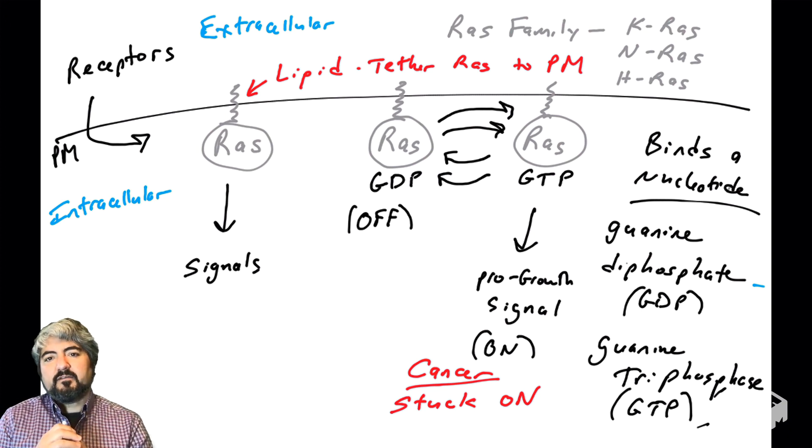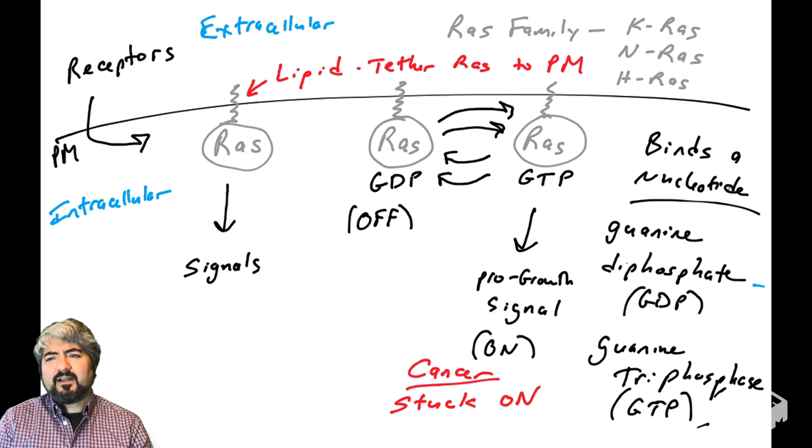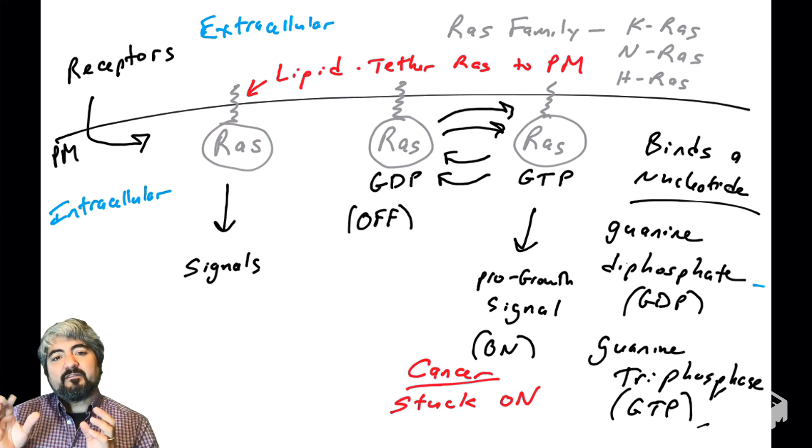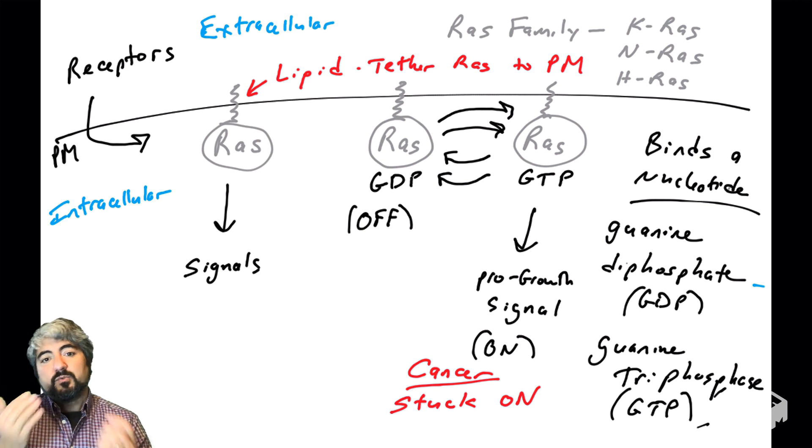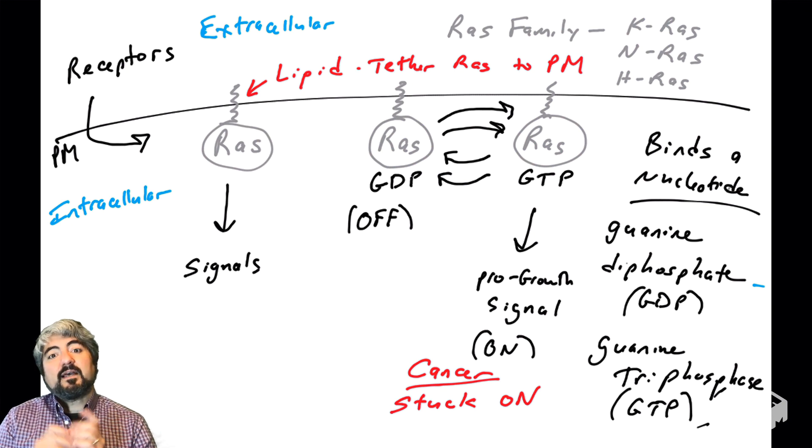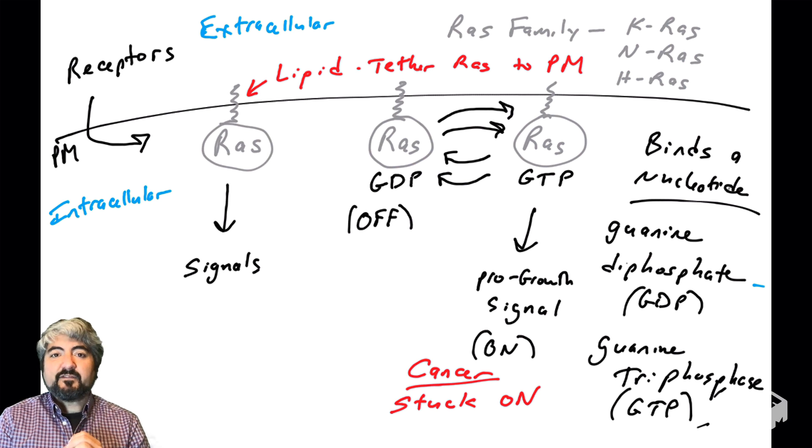I'm going to stop this video here because the explanation of regulating RAS and its GTP or GDP-bound state is pretty complicated. The takeaway is this protein RAS, tethered to the plasma membrane via a lipid and bound to a nucleotide, is a very important signaling molecule to tell the cell to go through the cell cycle. We're going to see how this is regulated in later videos.